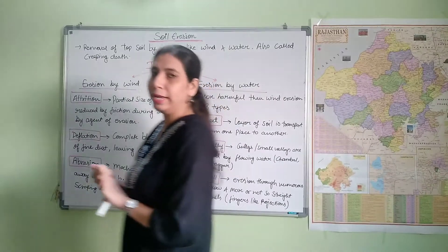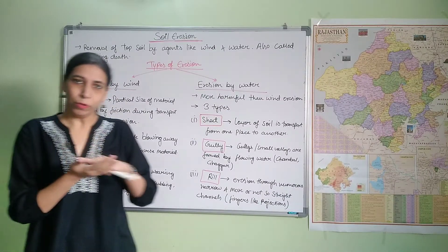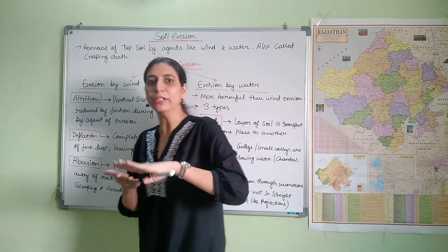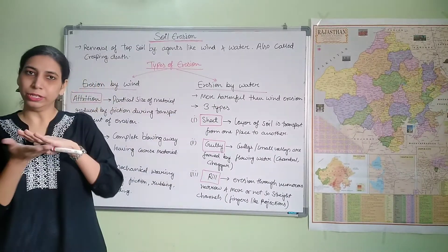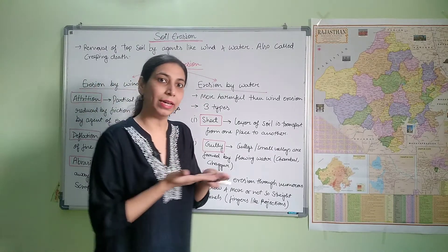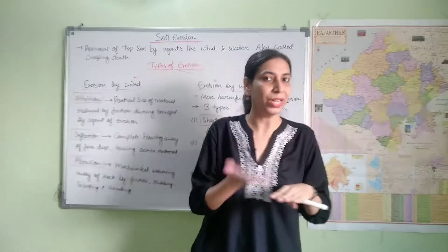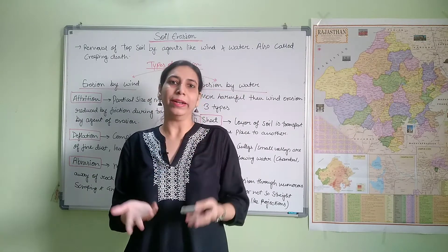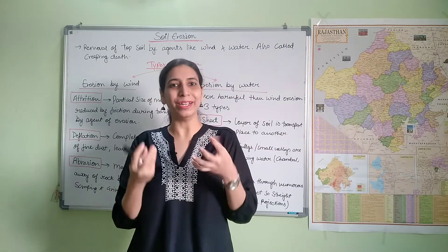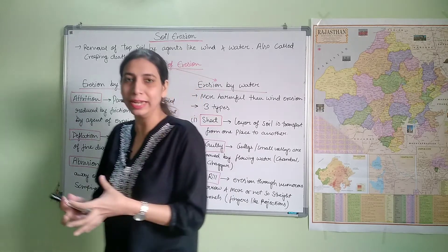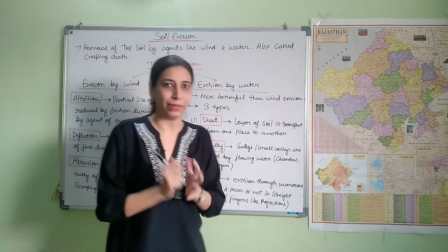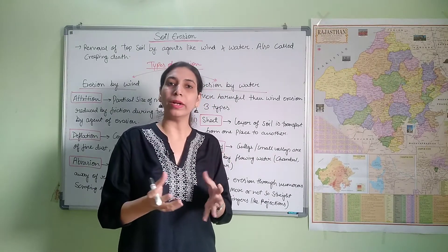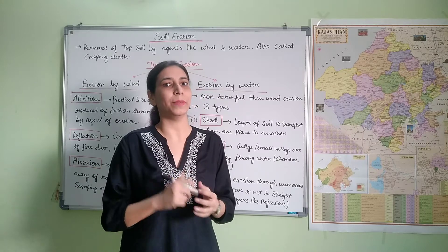So soil erosion is the removal of the top layer of soil, which is transported by wind and water from one place to another. When this top layer — the mineral-rich layer — is removed, the soil is rendered infertile, because the main essential layer is gone. That is soil erosion. It is also called 'creeping death.'